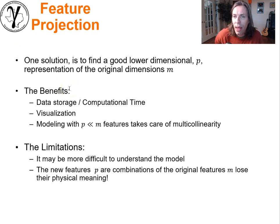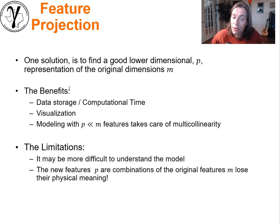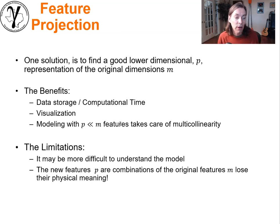The benefit of feature projection is significant. Imagine having 100 features and getting down to 25 — you've removed literally 75% of the storage requirements. In addition, computational time will also go down. Visualization is much easier; if you can get down to two features, you can just look at the data and understand the system. Modeling with P much less than M features automatically takes care of multicollinearity — that'll be captured and removed, with the combination of original features incorporating all previously shared information.